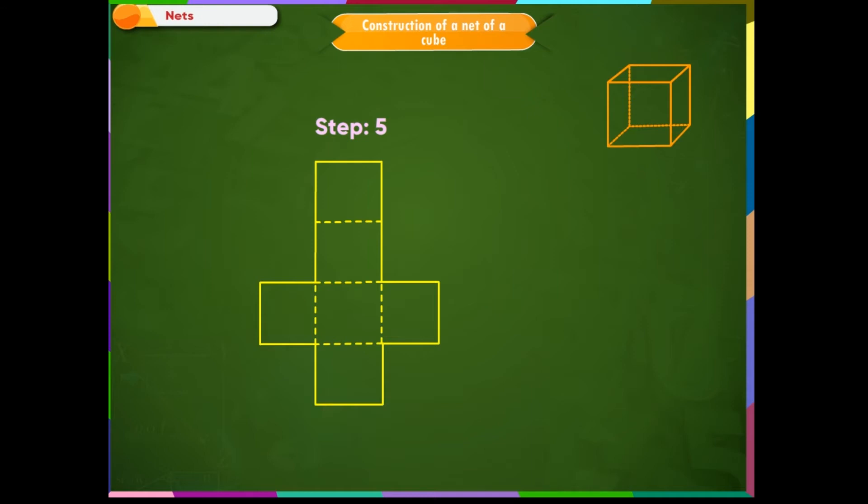Step 5: The net of a cube is ready. This two-dimensional pattern of a three-dimensional figure can be folded to form the cube.